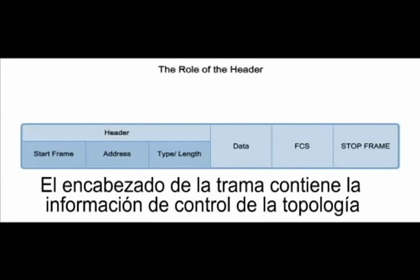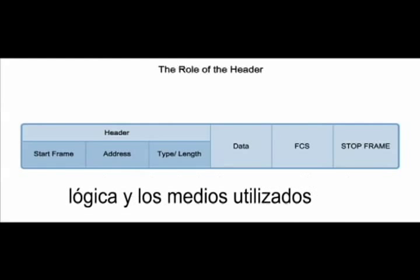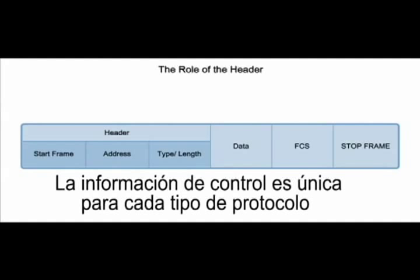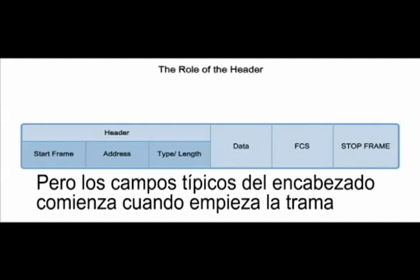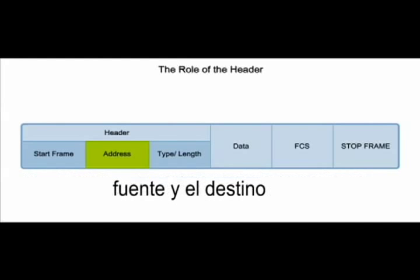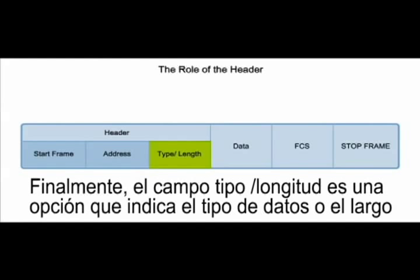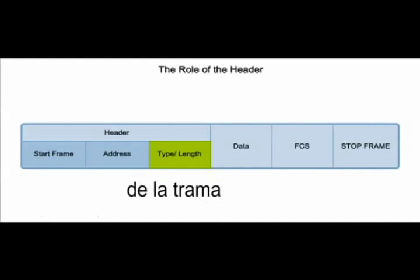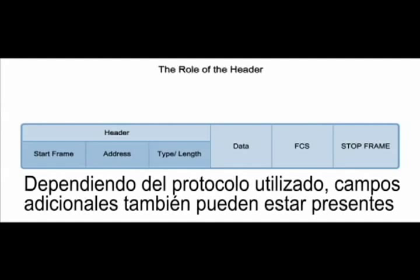The frame header contains the control information for the specific logical topology and media used. Frame control information is unique to each type of protocol, but typical frame header fields begin with the start frame, which tells devices along the way that a frame is coming. Next is the address portion, which is the data link layer source and destination address. Finally, the type/length field is an option that states the kind of data or the length of the frame. Depending on the protocol being used, additional fields may also be present.